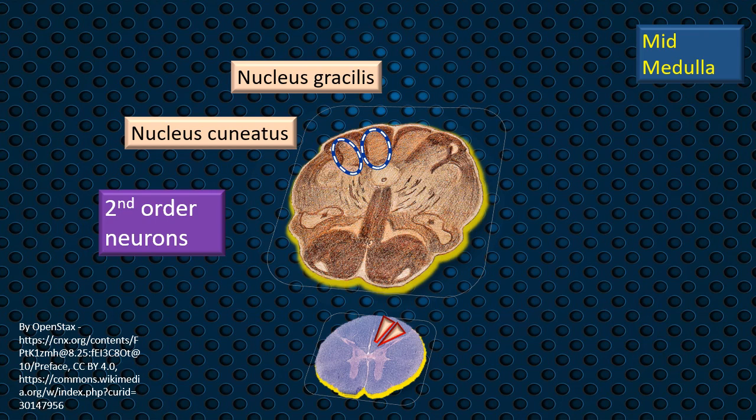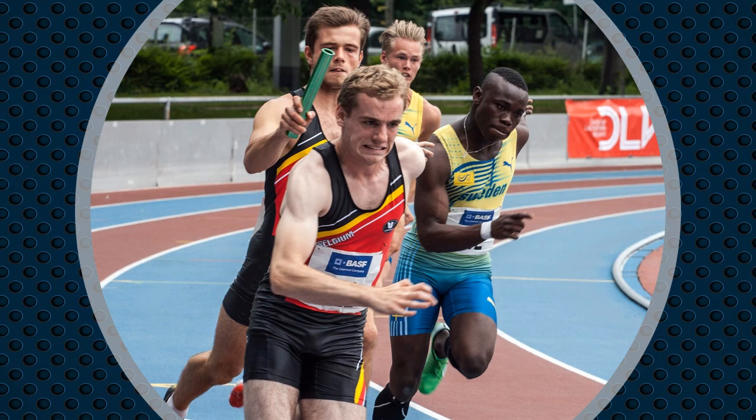The nucleus gracilis and nucleus cuneatus are the second-order neurons in this three-neuron sensory pathway that goes to the cerebral cortex. These act as a relay — the fibers of fasciculus gracilis and fasciculus cuneatus end respectively in these nuclei in the mid-medulla, just as described. A representation shows one person handing over a baton to another waiting there.